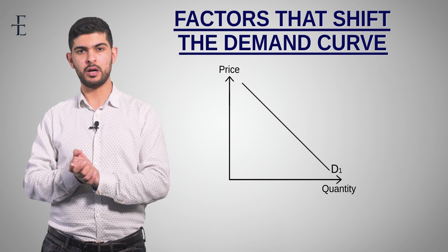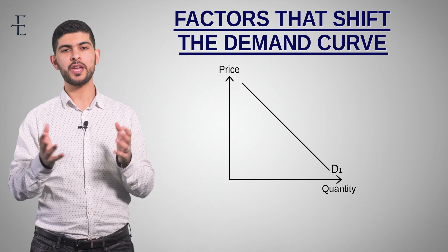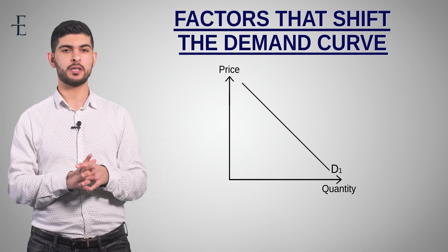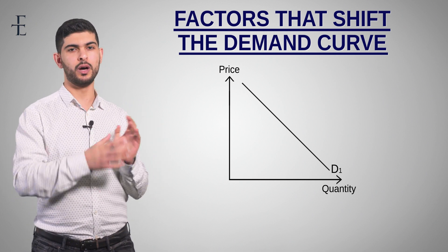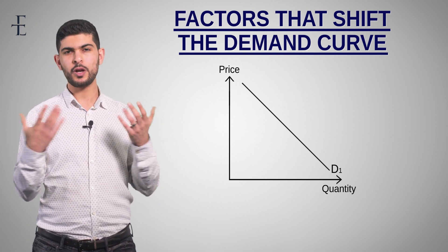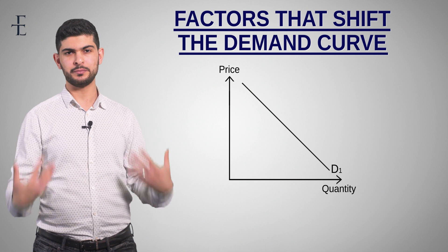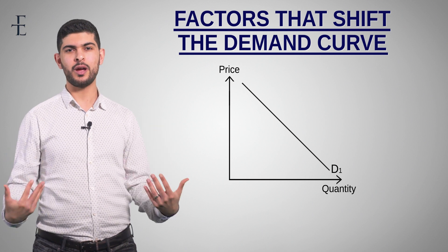So what kind of things would shift the demand curve? Number one — the clue is me, look at what I'm wearing. If something goes into fashion the demand for that good would shift out. If something goes out of fashion then the demand would shift in. Simple as that.